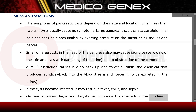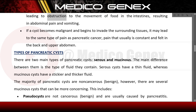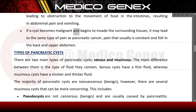On rare occasions, large pseudocysts can compress the stomach or duodenum, leading to obstruction of food movement in the intestines, resulting in abdominal pain and vomiting. If a cyst becomes malignant and invades surrounding tissues, it may cause constant pain felt in the back and upper abdomen, similar to pancreatic cancer pain.